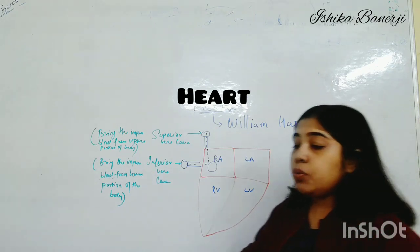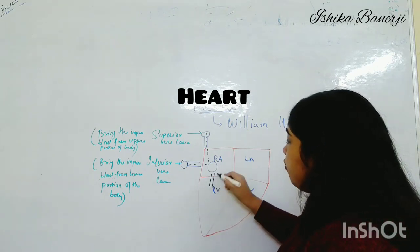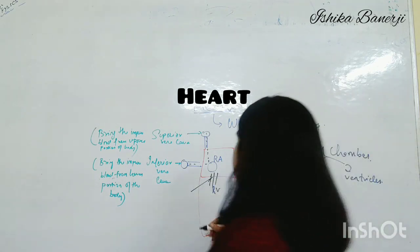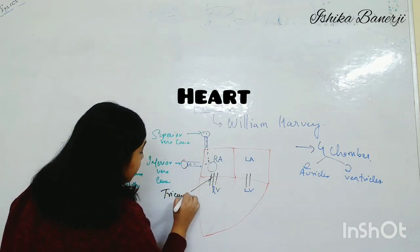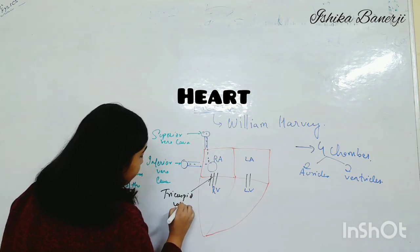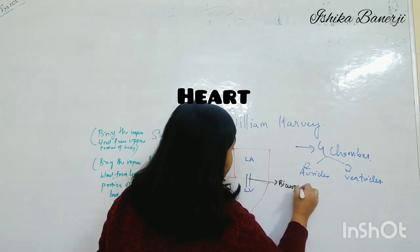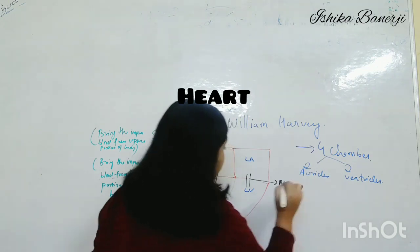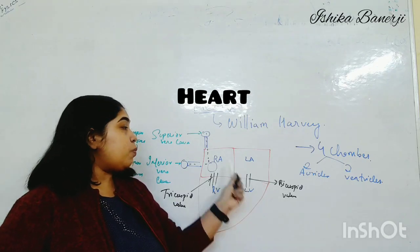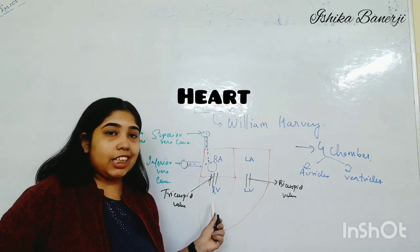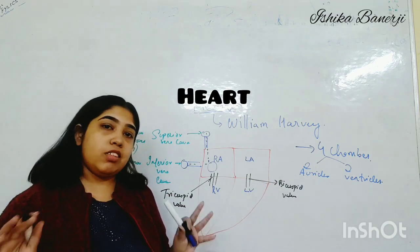Here in the heart we have valves present. The valve between the right auricle and right ventricle is called the tricuspid valve — tricuspid because three flaps are present. And the valve between the left auricle and left ventricle is called the bicuspid valve. This is an important point.